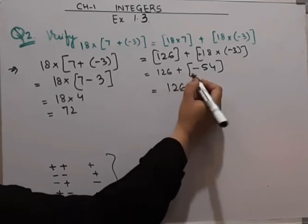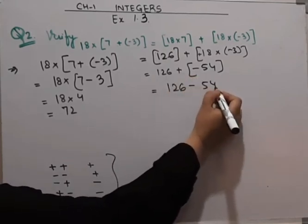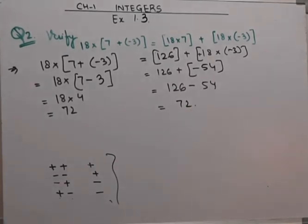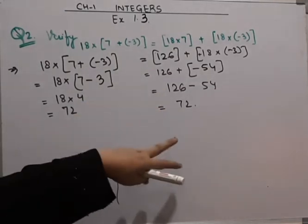Now 126 plus minus becomes minus 54. 126 minus 54 is 72. Hence our LHS is equal to RHS.